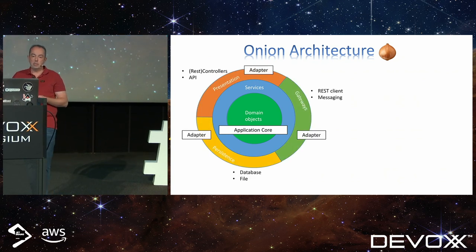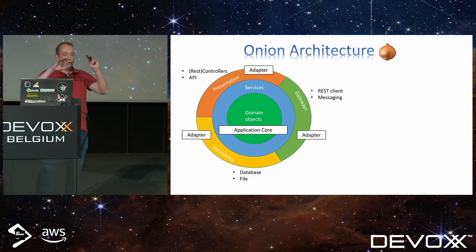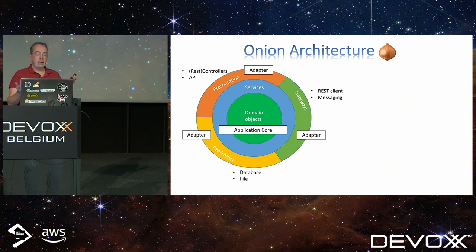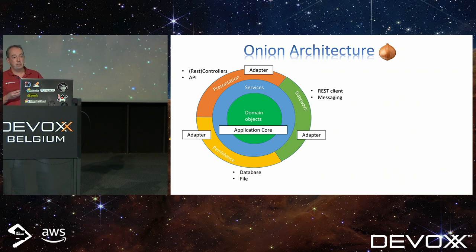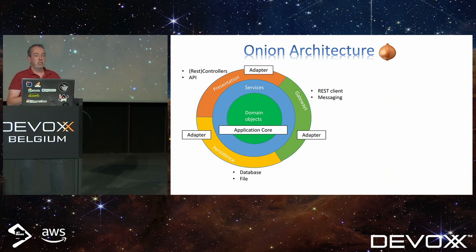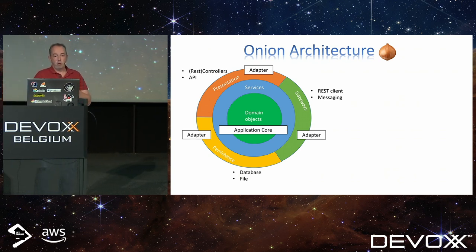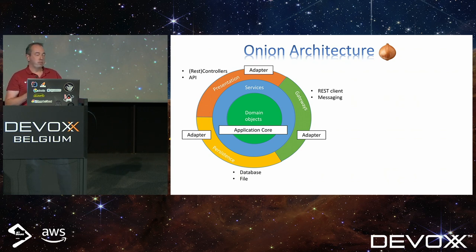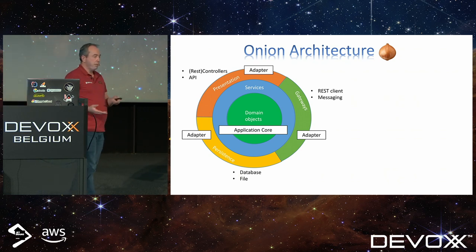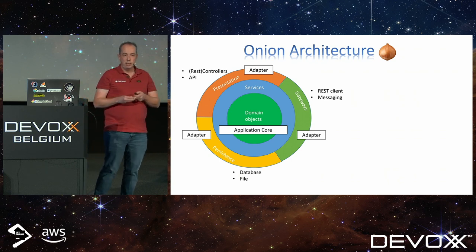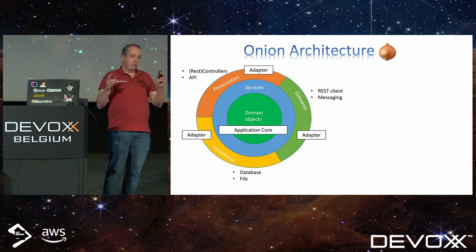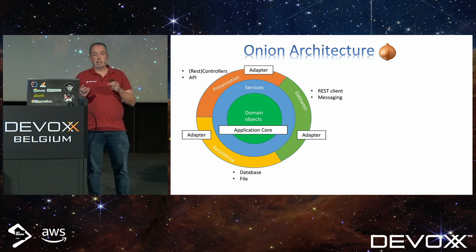That's where the adapters come in — the outer layers of your application. You can have, for example, a presentation adapter, which may be REST controllers or an API. But also persistency — so a database or file. Or what we call gateways: a REST client to another system, or maybe some messaging bus. These layers are basically there to get access to the application core.